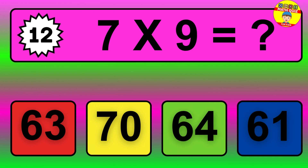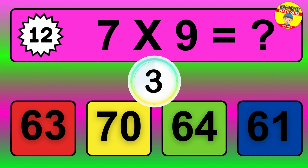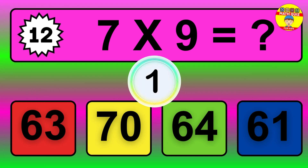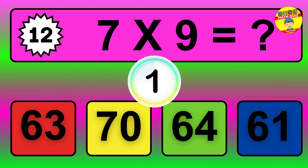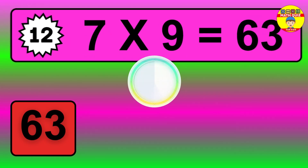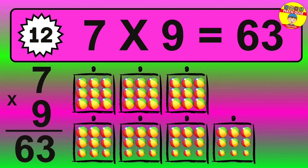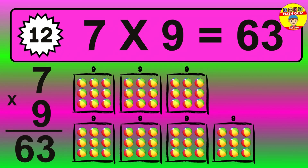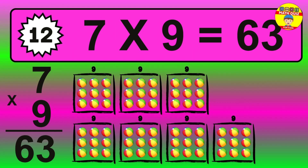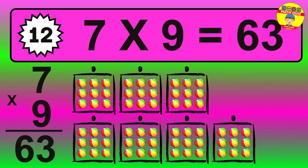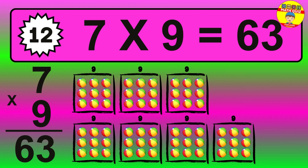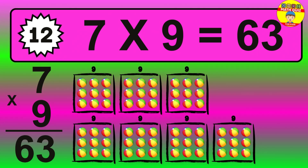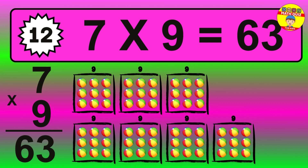Question 12. 7 times 9 equals what? The answer is 7 times 9 is 63. To calculate, we have 7 groups with 9 balls each one. So, how many balls do we have? 63 balls.